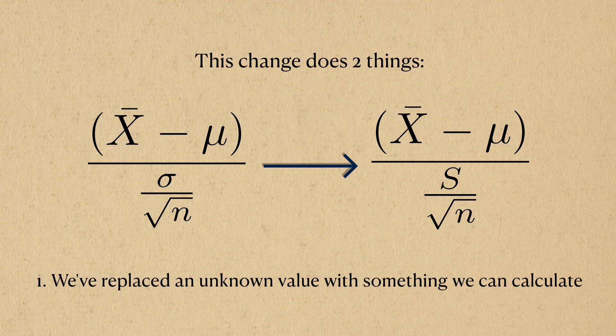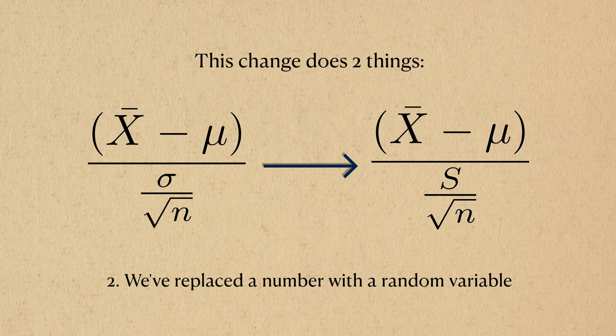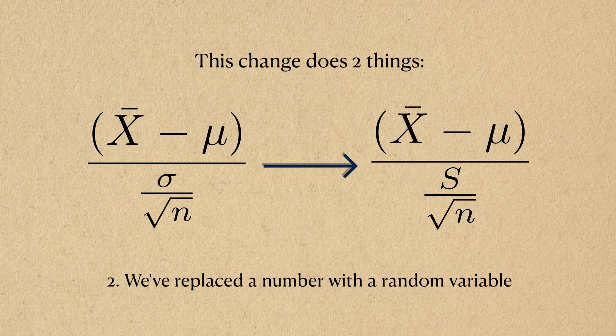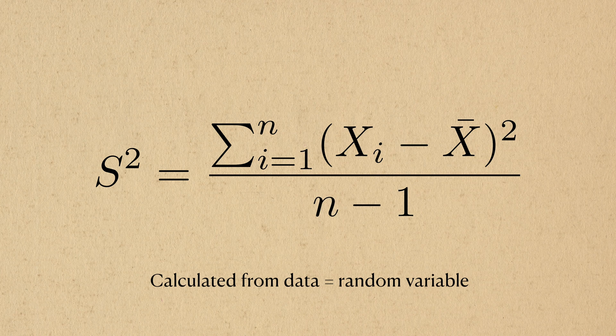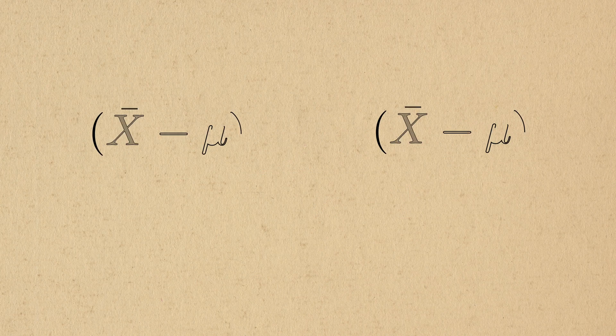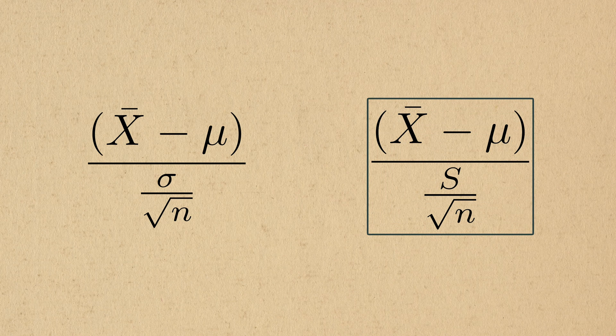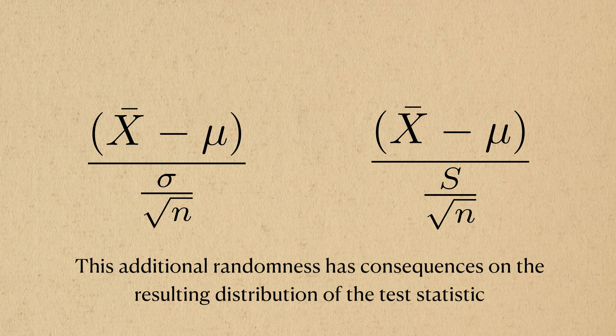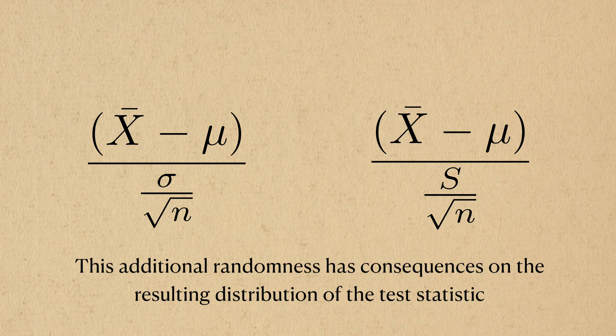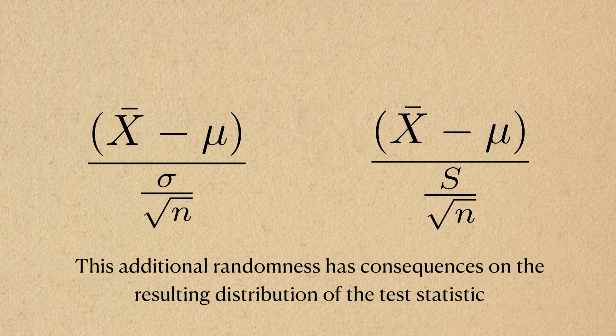One, we've replaced an unknown value with something we can actually calculate from the data, and two, we replace a scalar value with a random variable. Remember, we also calculate the sample variance from the data, so it's also a random variable too. Therefore, this test statistic on the right is really a function of two random variables, instead of one. Intuitively, the incorporation of this second random variable adds extra uncertainty to the overall distribution of this statistic.